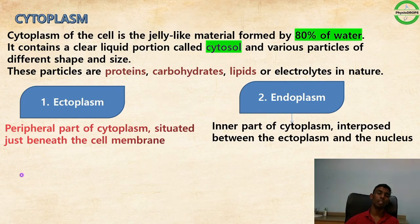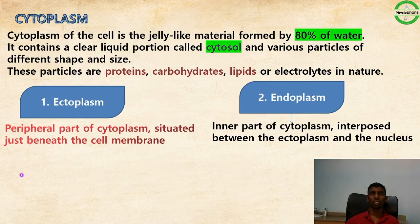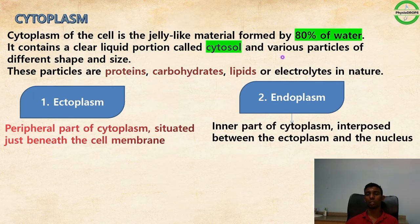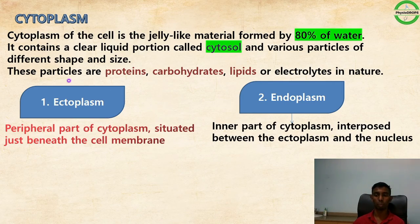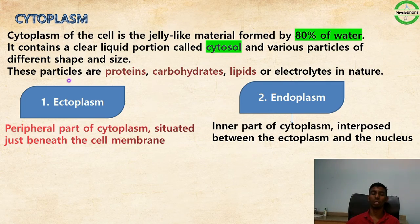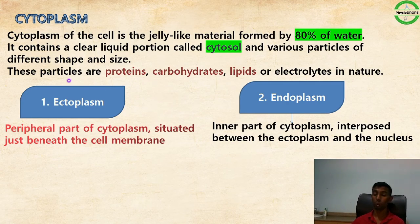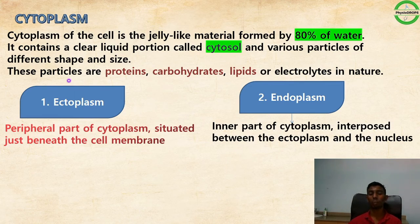The cytoplasm is a jelly-like, watery structure containing about 80% water. The clear liquid portion is called cytosol, which contains various particles of different shapes and sizes made of proteins, carbohydrates, lipids, and electrolytes. The cytoplasm has two regions: endoplasm (inner part between ectoplasm and nucleus) and ectoplasm (peripheral part beneath the cell membrane).